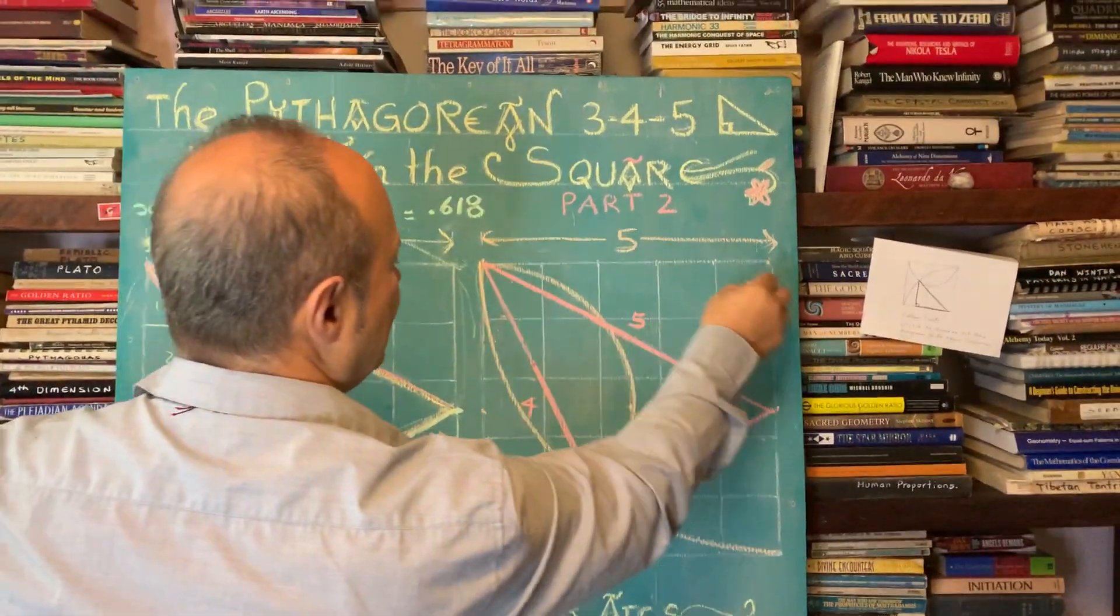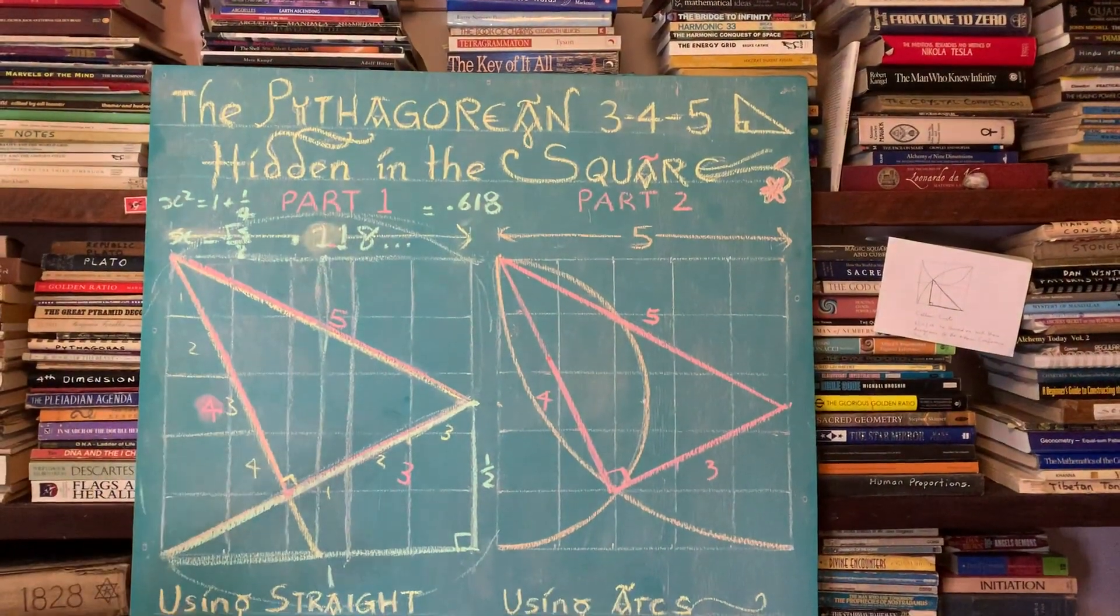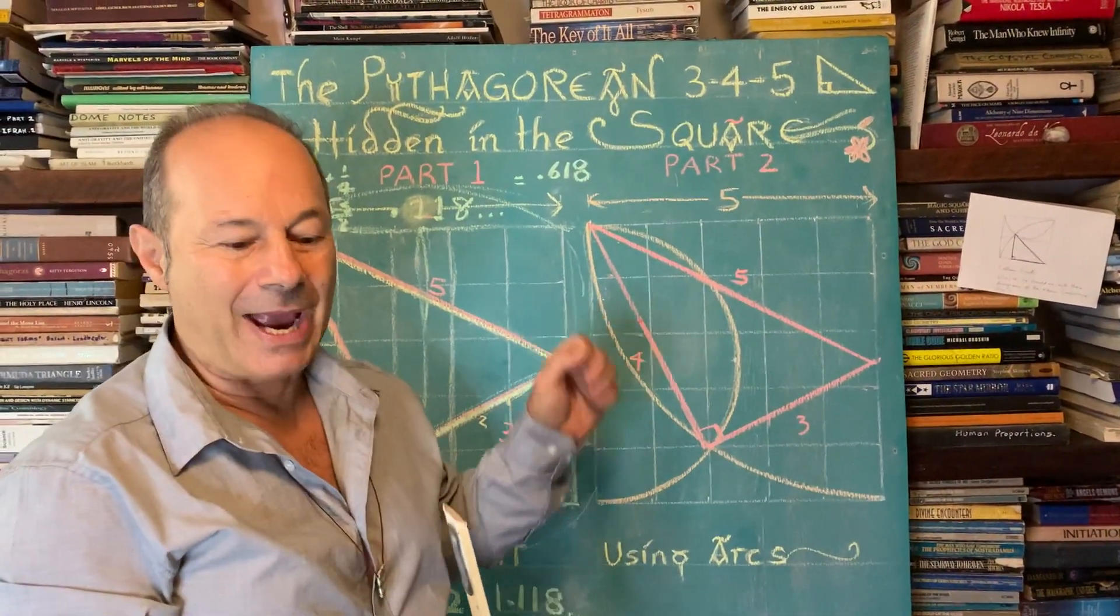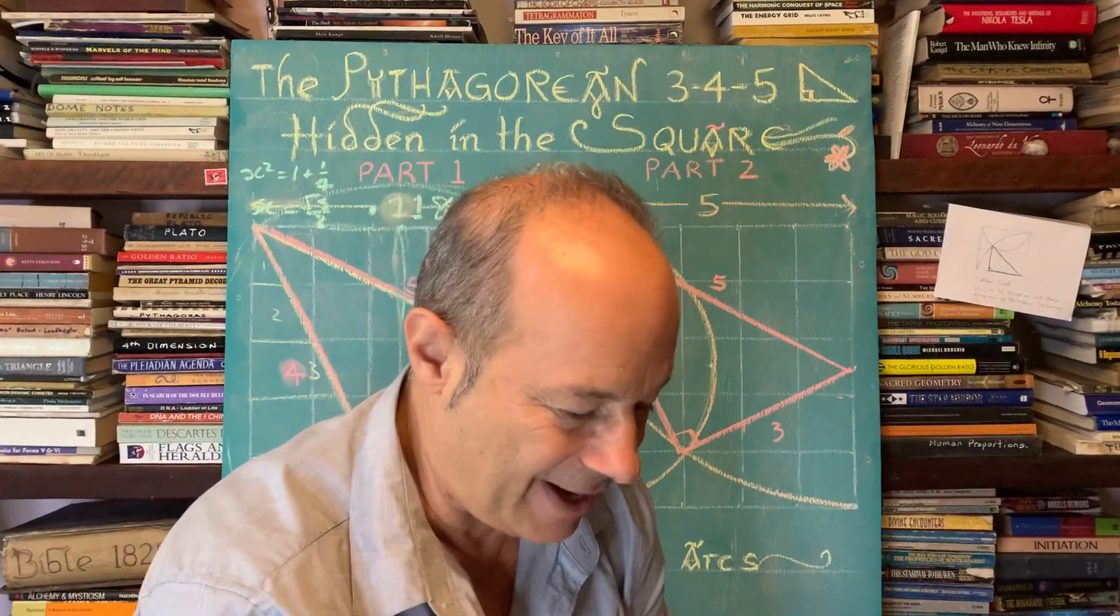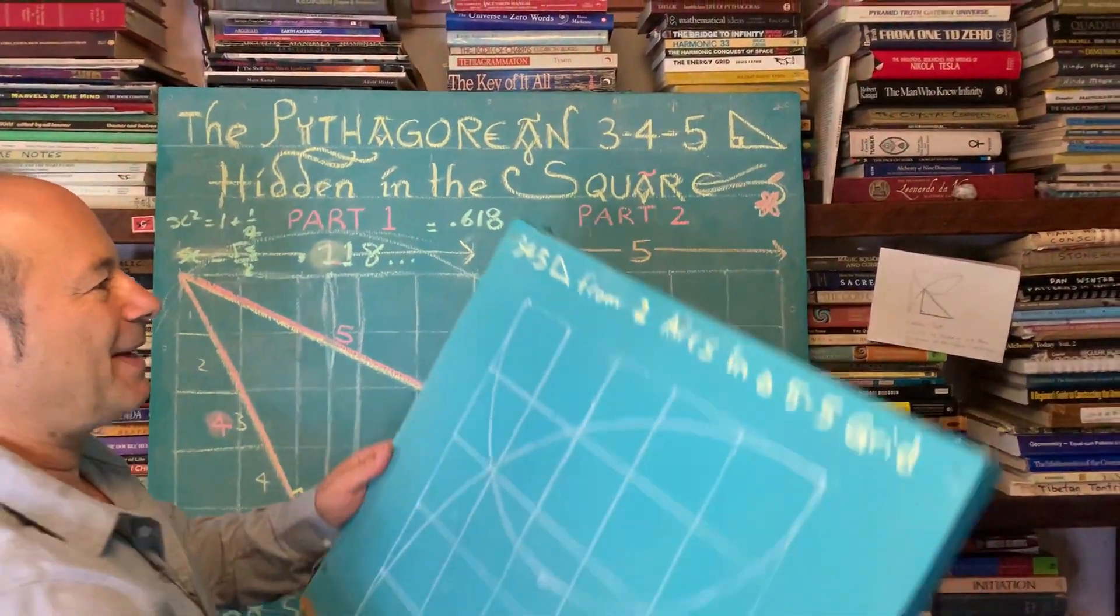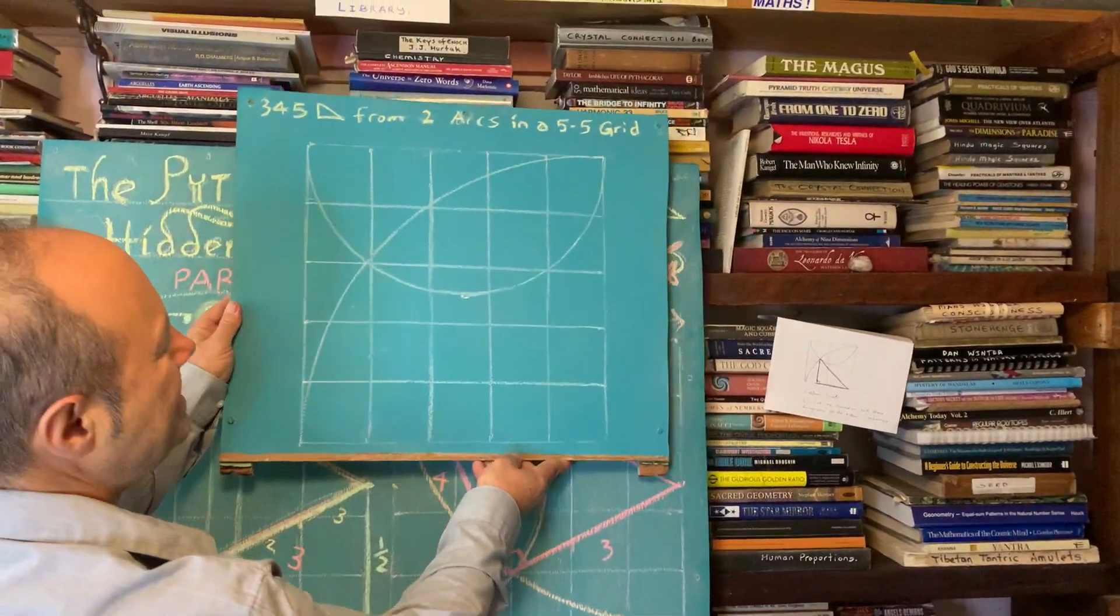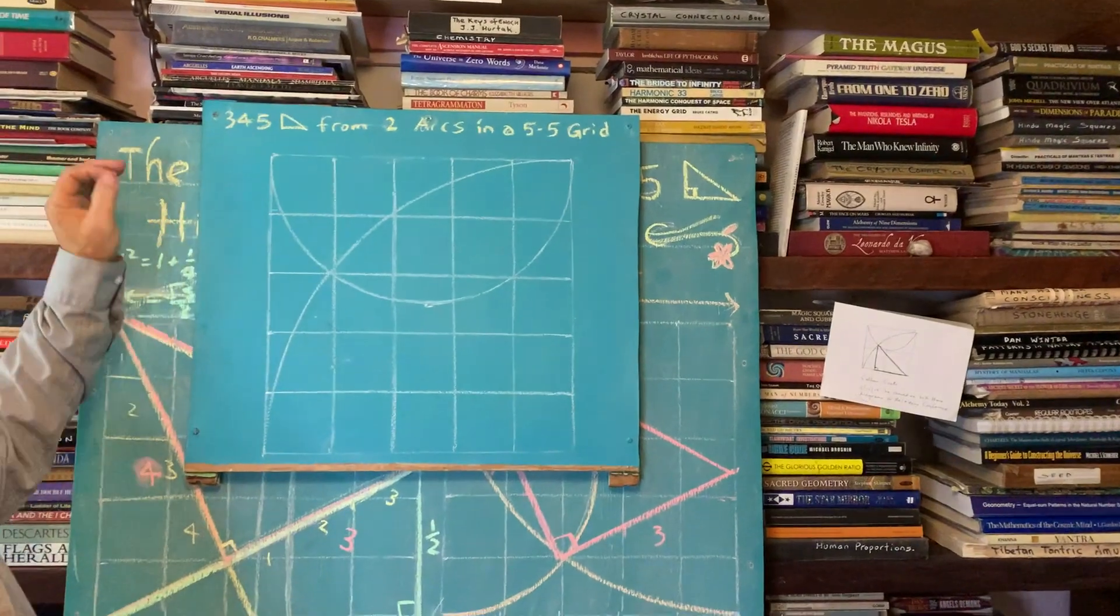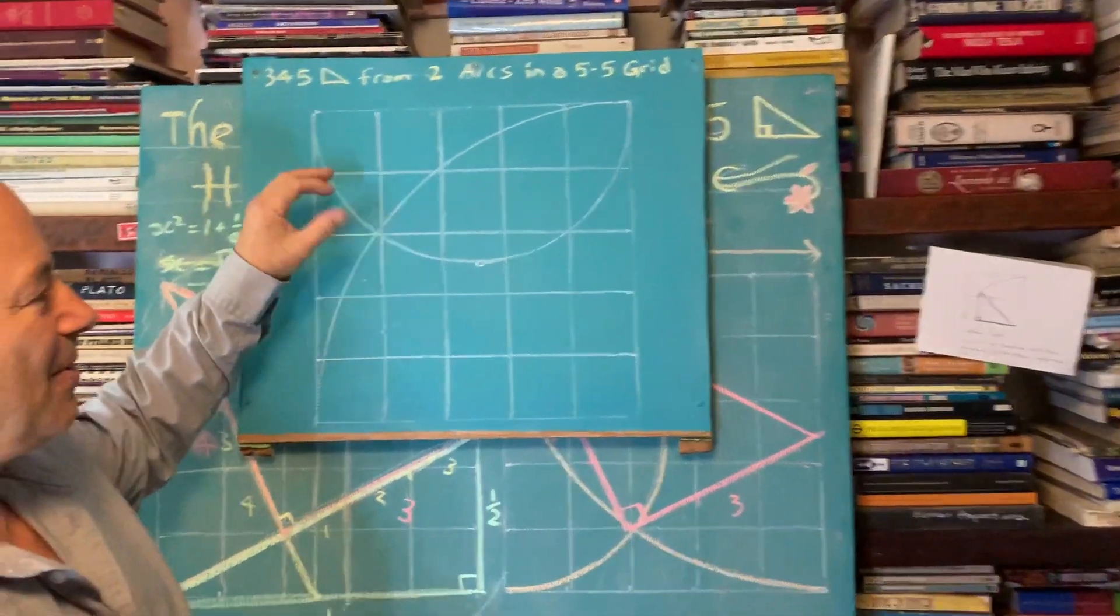So we'll call that five units - 3, 4, 5. Obviously this distance is the same length as that. I'm going to do this again. I want to show you a more elegant method of how it's actually drawn. I'm going to replace this with the same grid. We'll call it version two.